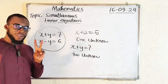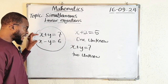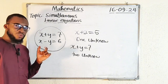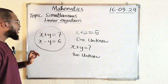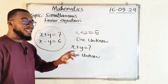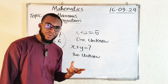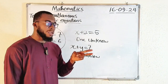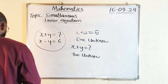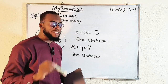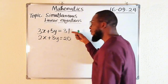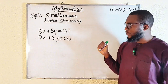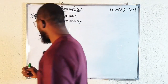We have one equation and a second equation making two equations. If you are given two equations, you need to have two unknown variables. In this lesson on simultaneous linear equations, we are going to learn how to solve systems containing two unknown variables. We have different methods: the elimination method, the substitution method, and the graphical method. In this lesson, we are going to learn how to solve by elimination.